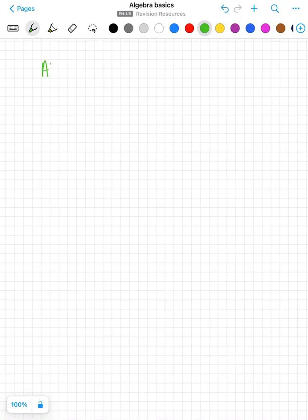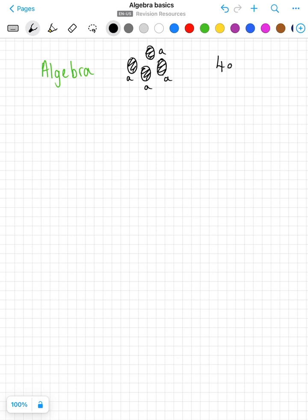What is algebra? Algebra, we are just using a letter to represent a number. So for example, if I have got four apples, I'm going to say I've got four apples and I'm just using a letter to represent something either known or unknown.